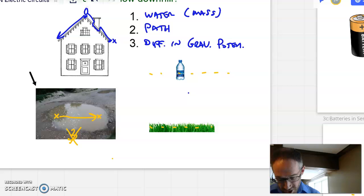So you've got to have mass. You have to have a path, and you have to have a difference in gravitational potential.